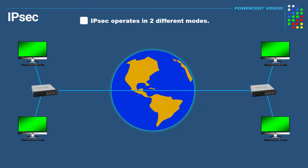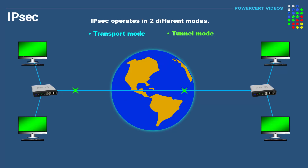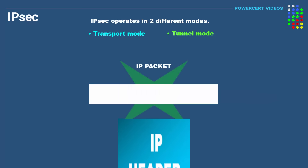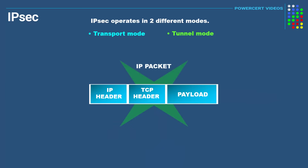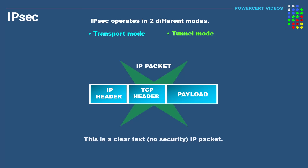IPsec operates in two different modes: transport and tunnel mode. When data is sent across the network, it's not sent in one chunk — it's sent in smaller chunks called packets. These packets have an IP header, TCP header, and a payload. The IP and TCP headers contain information such as source and destination IP address, port and sequence numbers, and so on. The payload contains the actual data. Right now, this IP packet has no security — the data is in clear text.